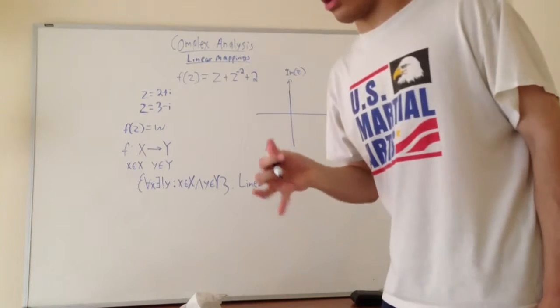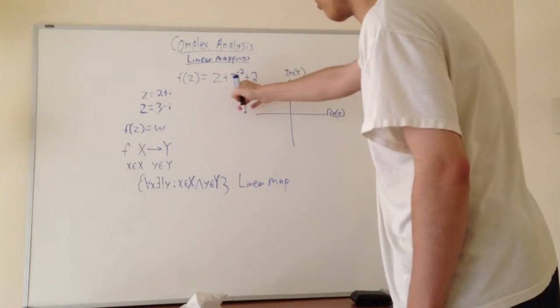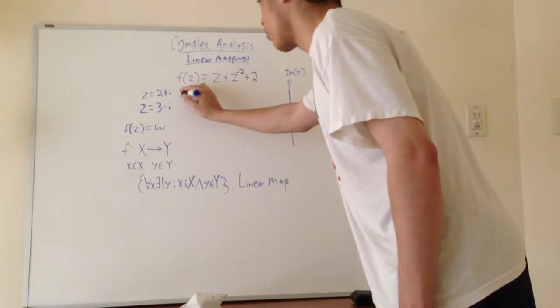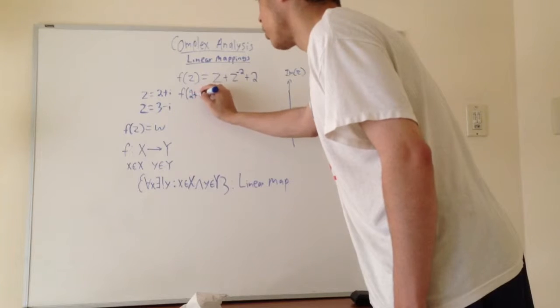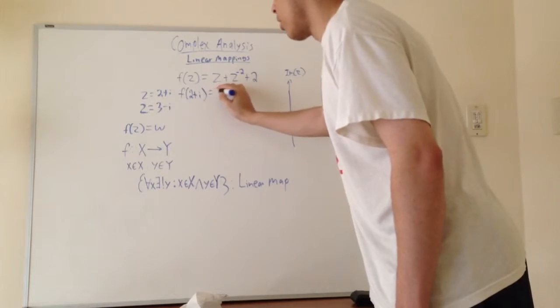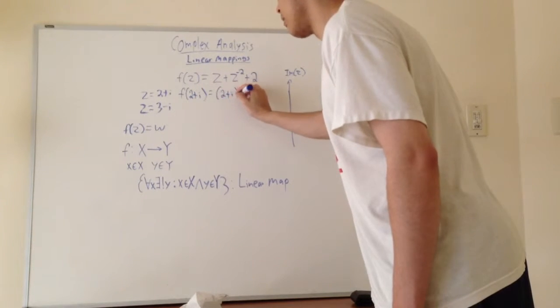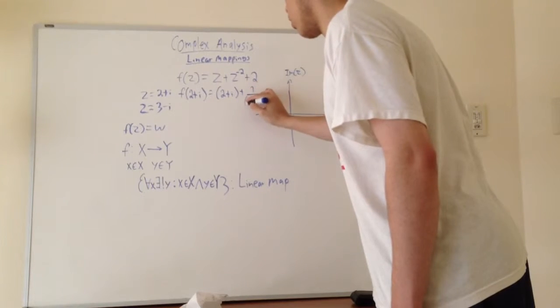So really, it's actually pretty straightforward. All we're doing is plugging in 2 plus i for the z here. So we're going to have f of 2 plus i—remember this is a complex number—equals 2 plus i plus 1 over (2 plus i) squared plus 2.